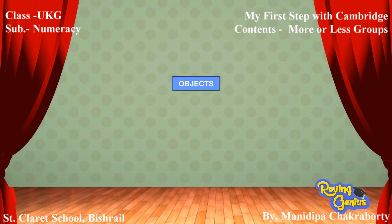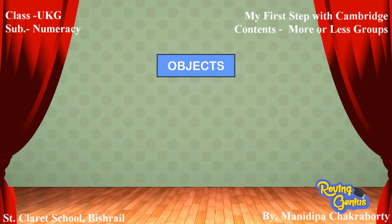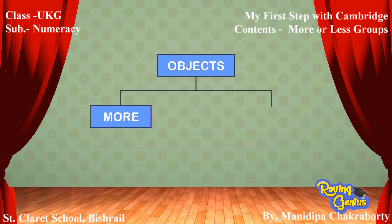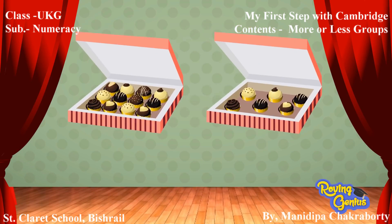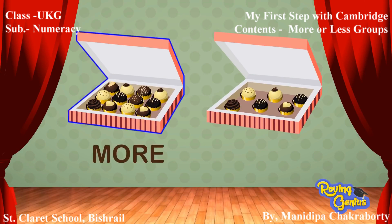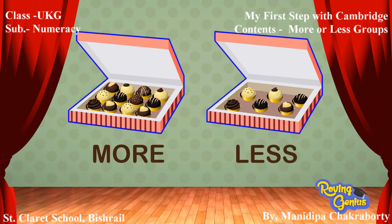When we have two objects of different quantities, one is more in quantity and the other is less. Look at these boxes of sweets — this box has more sweets and this box has less sweets.